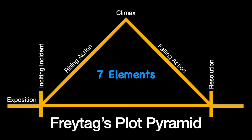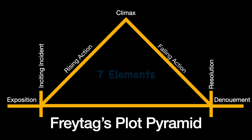The seventh and last element is called denouement, and not every story has one. Denouement is a little wrap-up at the end. It doesn't advance the plot in any way — the plot is essentially over at this point. All it really does is provide a little satisfaction for the audience.